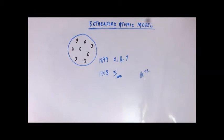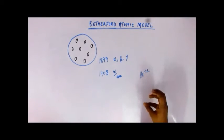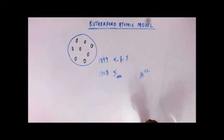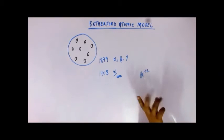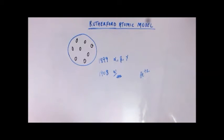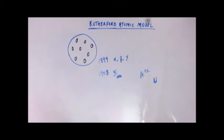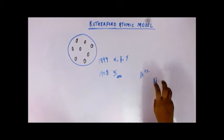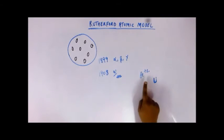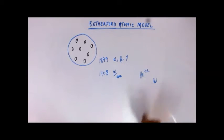The alpha particle is the helium nucleus. Helium has atomic number two — two electrons, two protons, two neutrons. When you knock out both electrons from helium, what remains is the nucleus with a net +2 charge. Alpha particles arise from radioactivity: when a larger atom like uranium or radium disintegrates, smaller particles and radiation are given out, and the helium nucleus — the alpha particle — is one of those outputs.